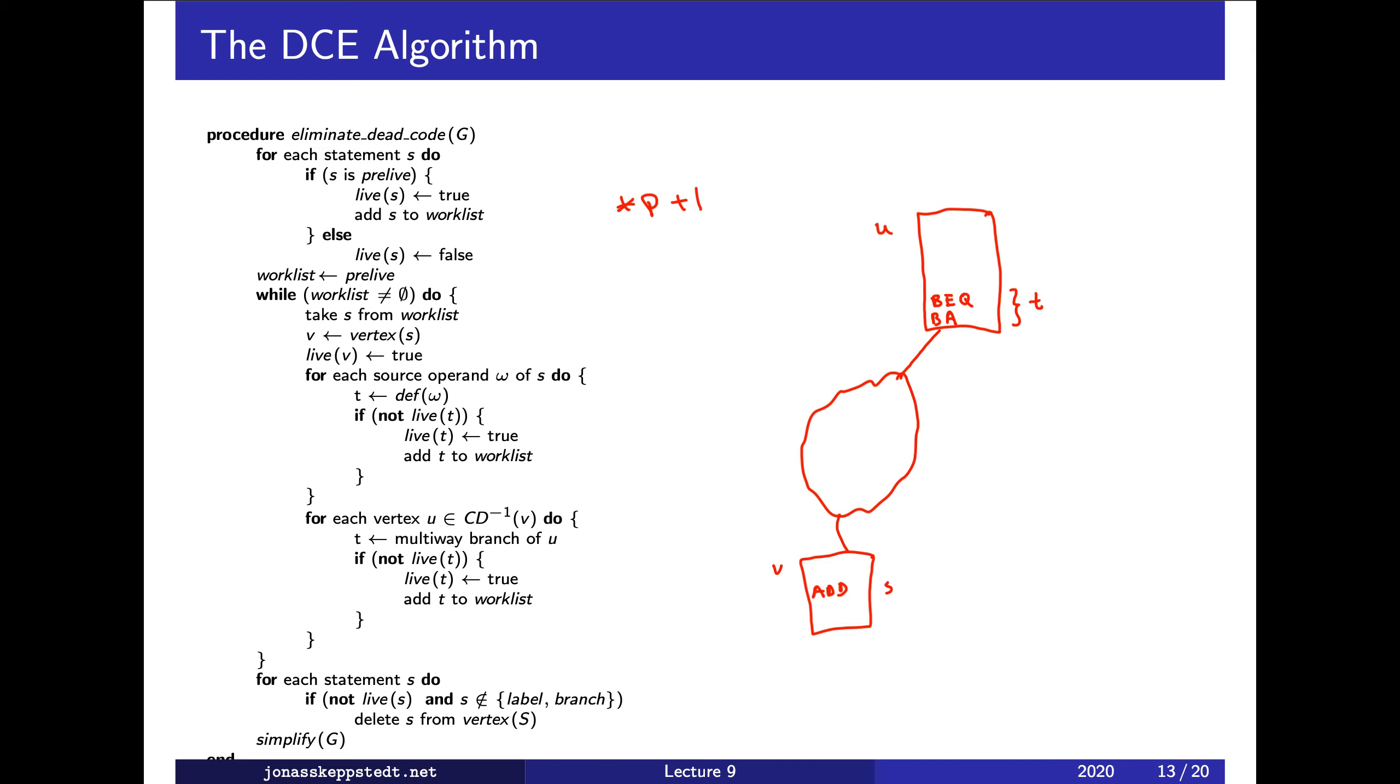We now move to the first part of the dead code elimination algorithm. The second part concerns removing branches. What we do is first collect all so-called pre-live statements, those which can affect the visible program output.